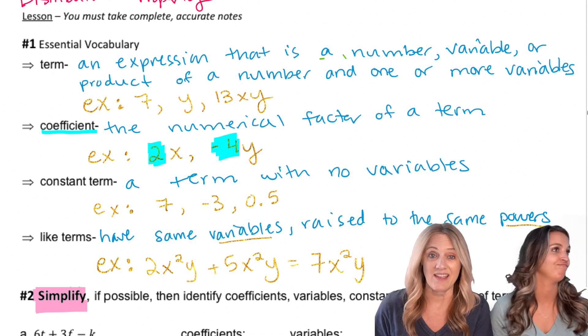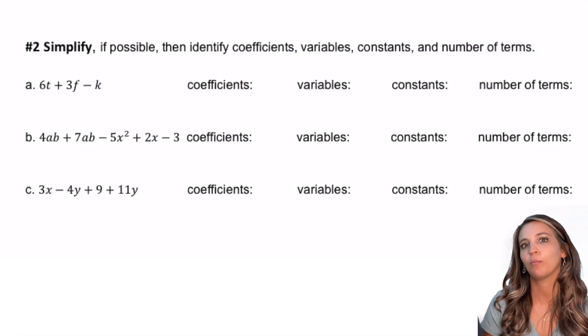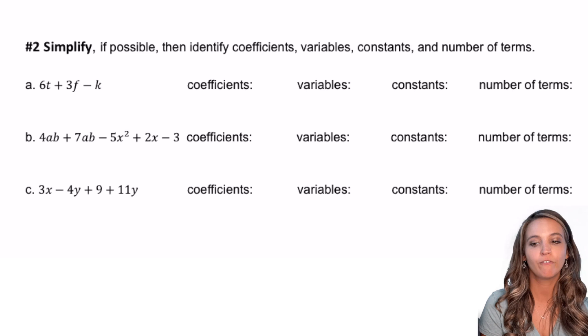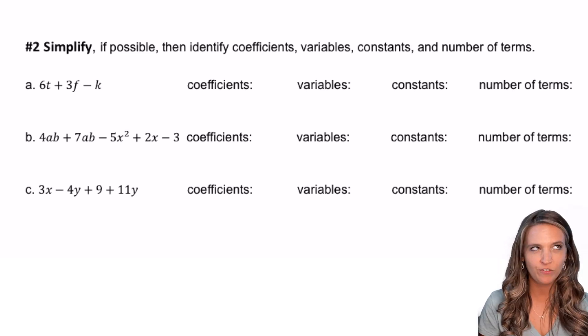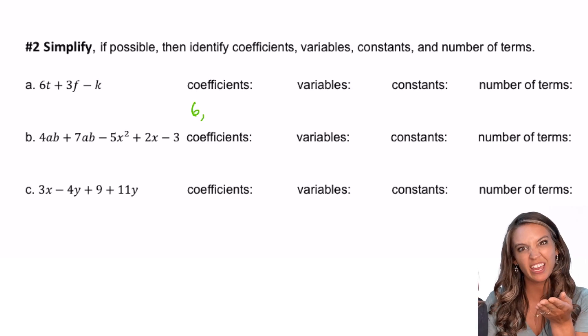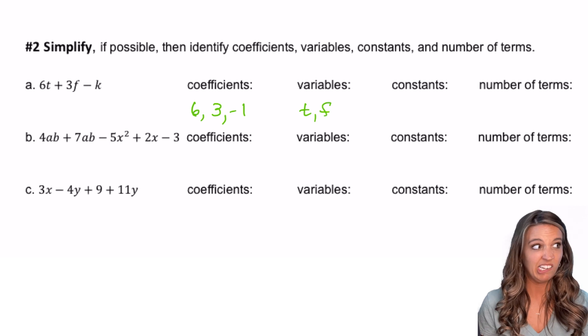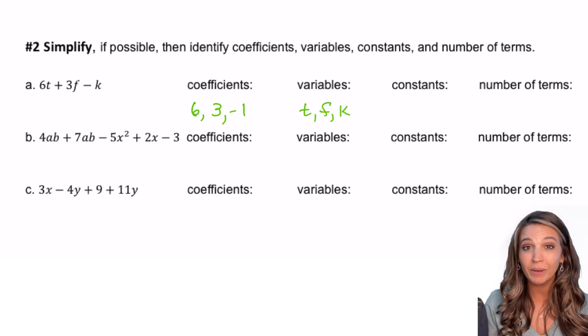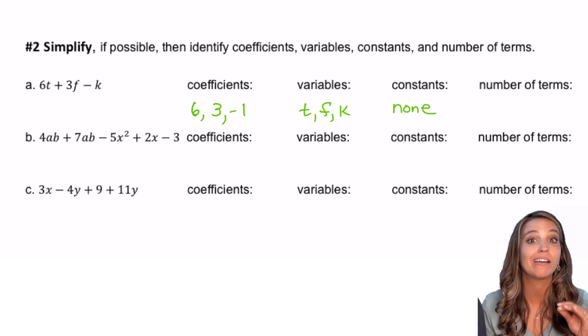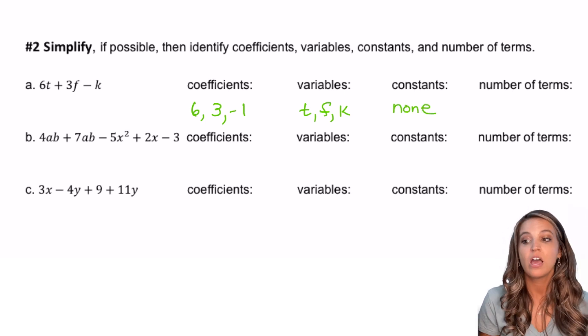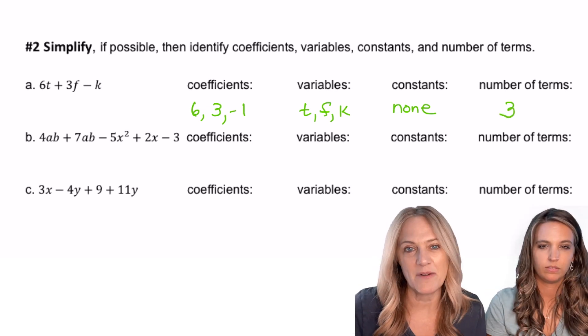Let's practice identifying coefficients, variables, constants, and number of terms. First example: 6t + 3f − k. Coefficients: 6, 3, and what's in front of the k? A negative one. Variables: I've got a t, an f, and a k. Constants: all of my terms have variables, so I don't have any constants. Be sure to write none, don't leave it blank. Number of terms: I have three.